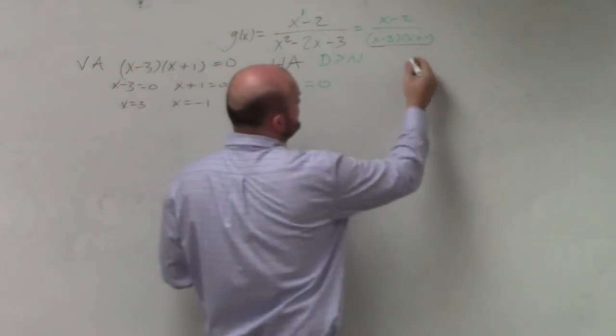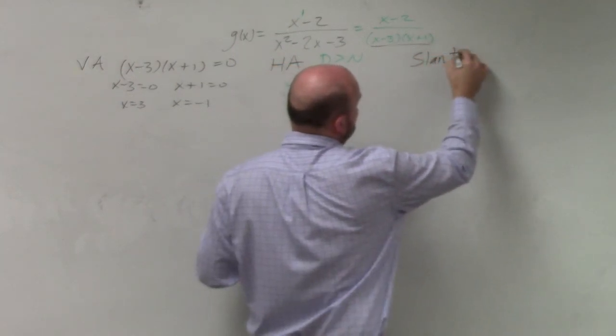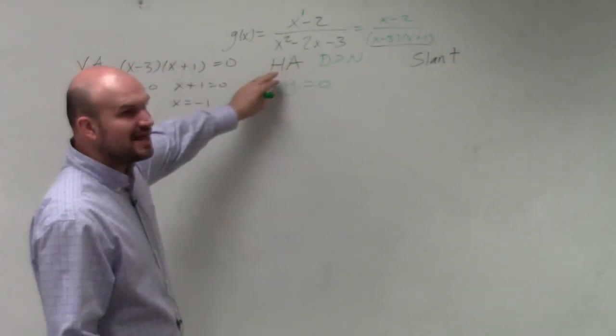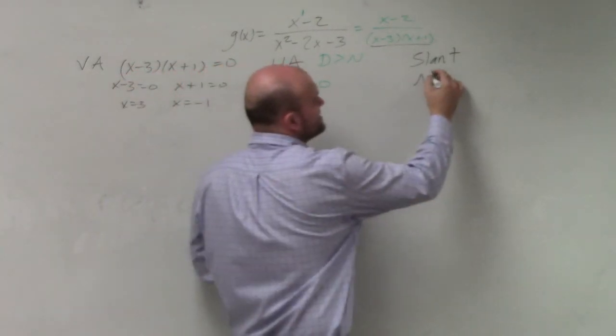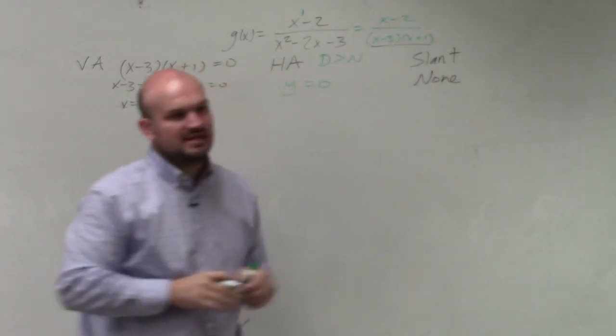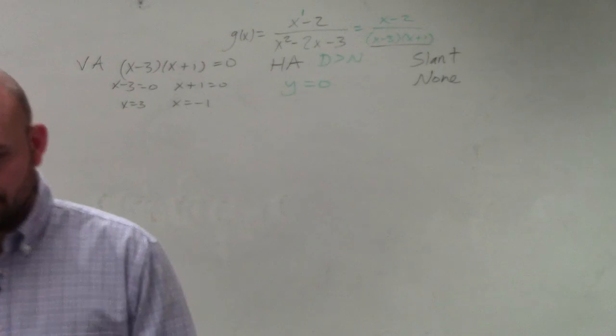Then the last asymptote is the slant asymptote. Well, guys, if you have a horizontal asymptote, there is not going to be a slant asymptote. So we'll just say that's none. Then, the next...